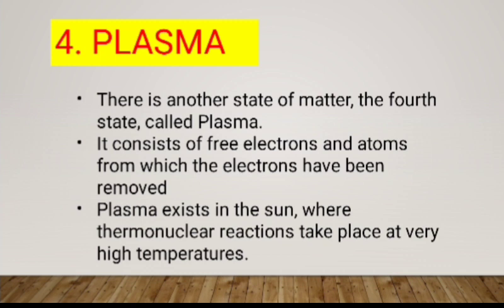The fourth state of matter is plasma. Plasma consists of free electrons and positive nuclei — atoms from which electrons have been removed. It is a mixture of free electrons and positively charged nuclei.